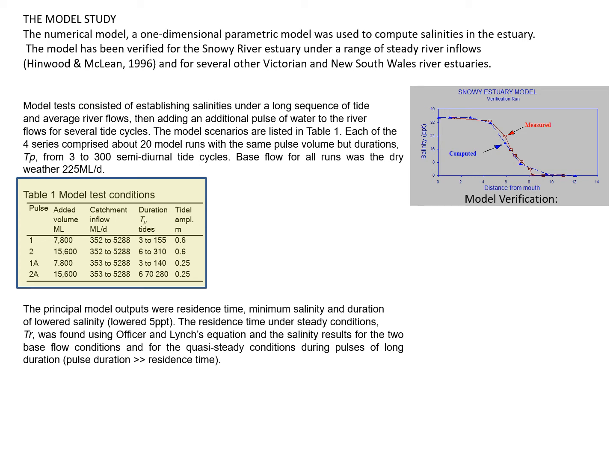The model tests consisted of establishing salinities under a long sequence of tide and average river flows, then adding an additional pulse of water to the river flows for several tide cycles. The model scenarios are listed in Table 1, highlighted in the middle of the slide. Each of the four series comprised about 20 model runs using the same pulse volume, but with durations ranging from 3 to 300 semidiurnal tidal cycles. The base flow used for all runs was the dry weather value of 225 megalitres per day. Two different tidal amplitudes were used — 0.6 metres representing the open estuary entrance, and 0.25 metres where the entrance was constricted. The principal model outputs were residence time, minimum salinity, and duration of lowered salinity.